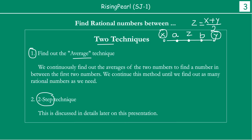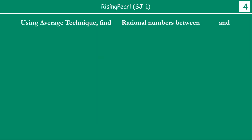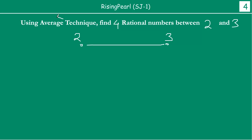Let's talk about the average technique with some examples. Let's say we need to find out four rational numbers between 2 and 3. How do we find out four rational numbers between 2 and 3? Let's first design the strategy. So this is your number 2 and this is your number 3, and we are going to use the average technique — not the two-step technique.